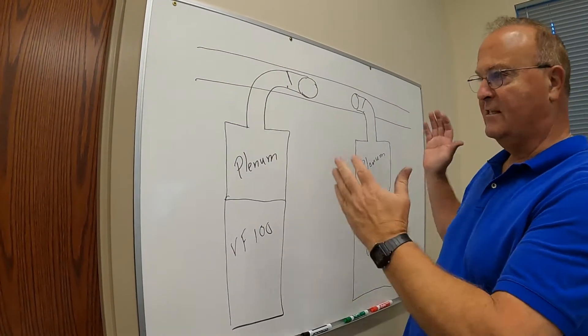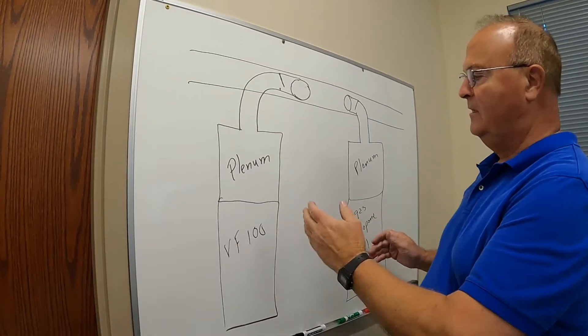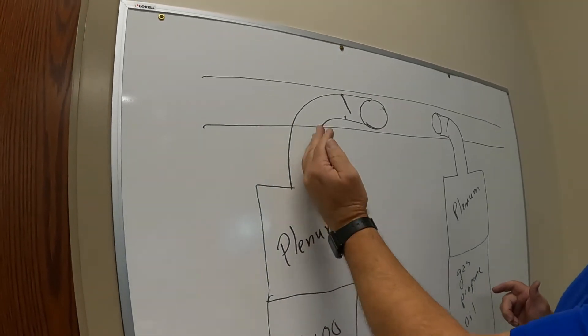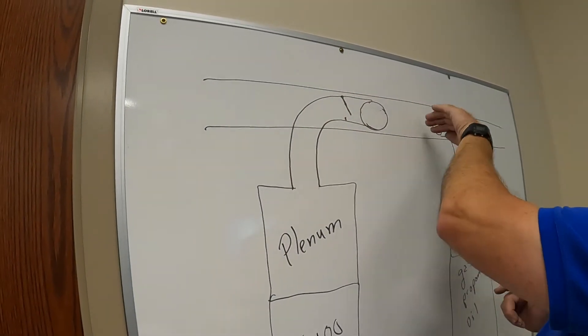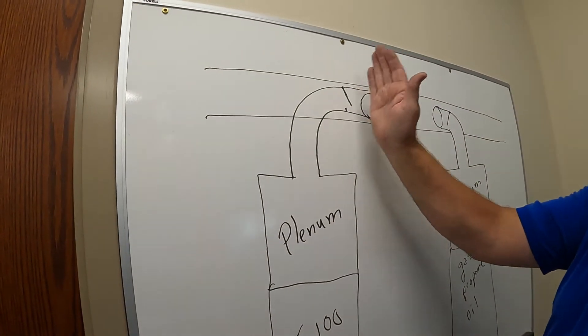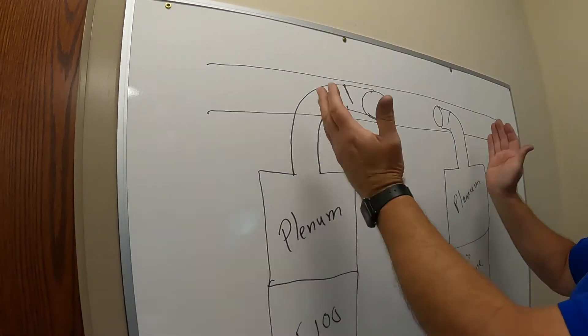One thing you're going to have to have is a backdraft flap, and that's what I'm showing right here. So the air can basically only go into the warm air trunk line. It can't come out. If it tries to come out, this flap's going to shut and it's going to block it. Both furnaces need a backdraft flap.